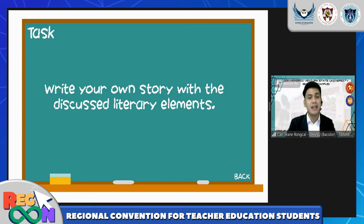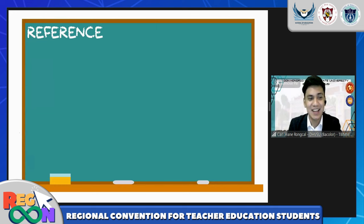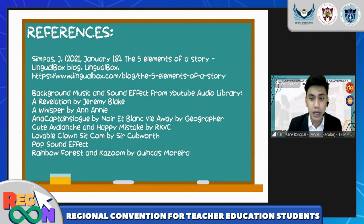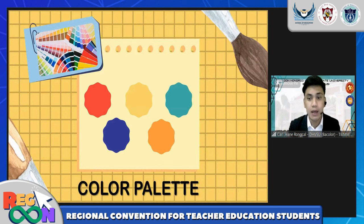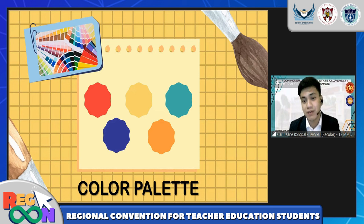Don't forget to allocate a slide for your references. If you observed, we integrated specific colors in our presentation because different colors have relative effects on mood: red helps students be more alert, orange encourages critical thinking, yellow encourages creativity, green helps students feel calmer, and blue has a calming effect on the heart rate. These colors are really important to initiate a better learning experience.